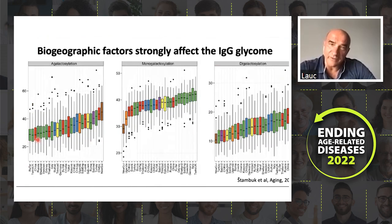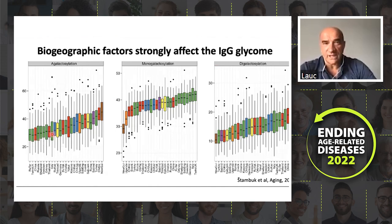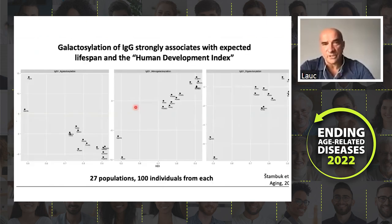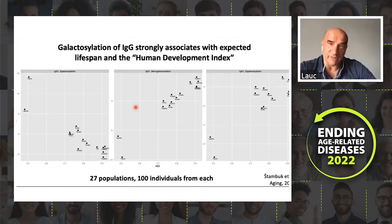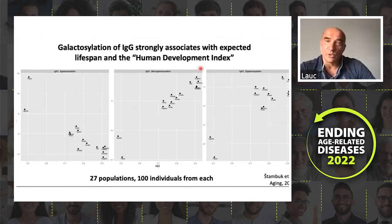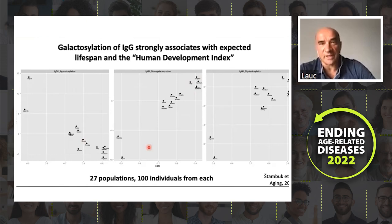For biogeographic factors, we looked at 27 different cohorts from all around the world and we see that they are different. Interestingly, the parameter which explains the difference the most is the expected lifespan and the human development index. People living in developed countries with a larger expected lifespan will have their glycans aging more slowly than people living in less developed countries with a shorter expected lifespan.